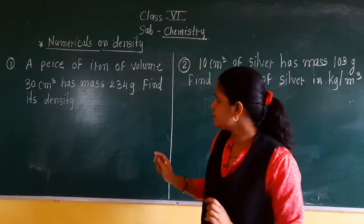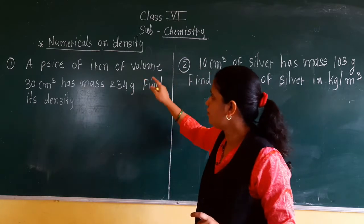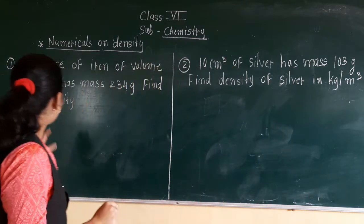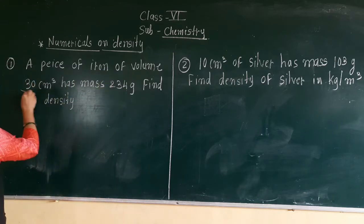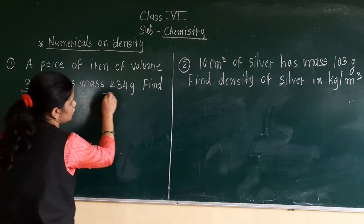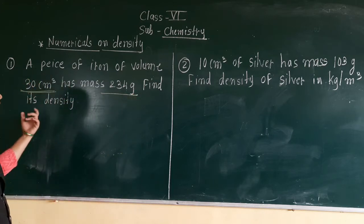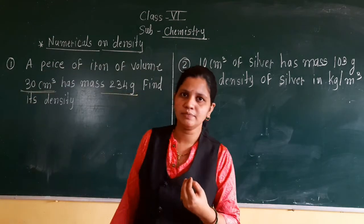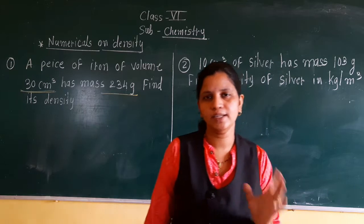So the first numerical: a piece of iron of volume 30 cm cube has mass 234 gram. Find its density. These are simple questions where you just have to find the density.